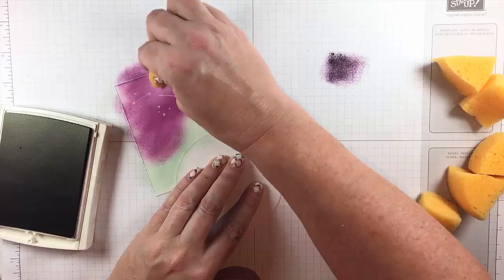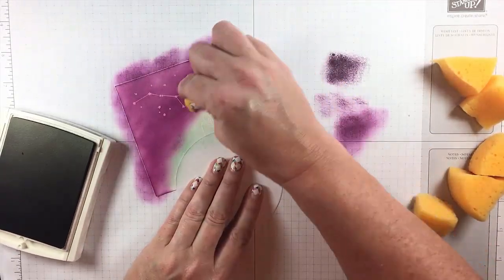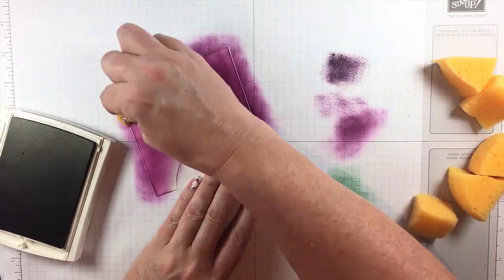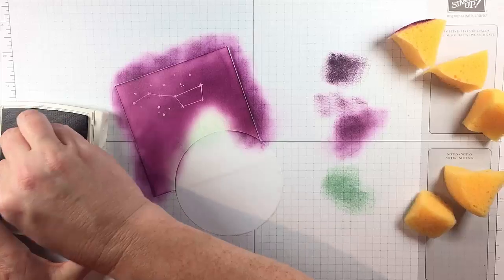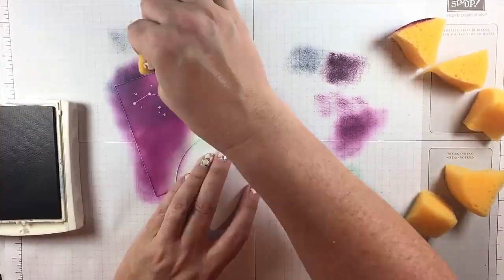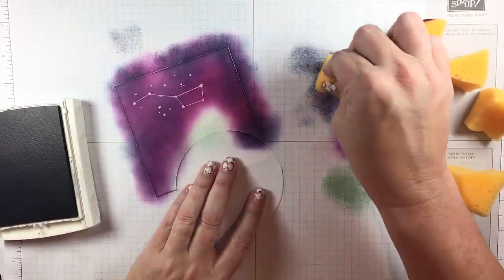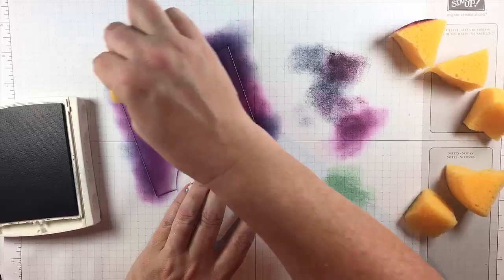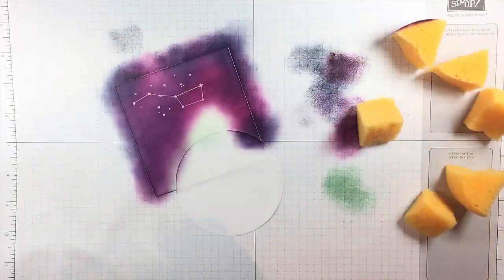The second color is Blackberry Bliss, a nice dramatic purple color for the sky, and then I'm going to finish it off with Night of Navy just to add a little bit of depth and darkness. I love that Big Dipper image so much fun. So I'll make the edges even a little bit darker and then that just finishes my sky.